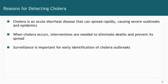Addressing the reasons for wanting to detect cholera: cholera is an acute diarrheal disease which can spread rapidly and can cause severe outbreaks and epidemics. When cholera occurs, interventions need to be put in place quickly to eliminate deaths and prevent spread of the outbreak. Surveillance is very important to identify outbreaks quickly so that you can put the interventions in place.